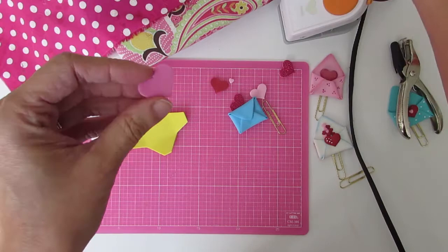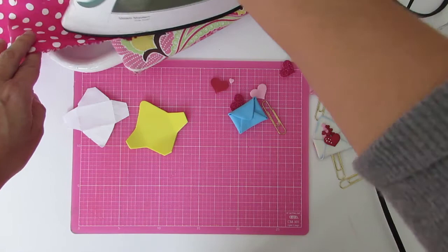You could also iron a heart to give it that puffy raised dimensional look. Here I'm gluing it down to my heart.